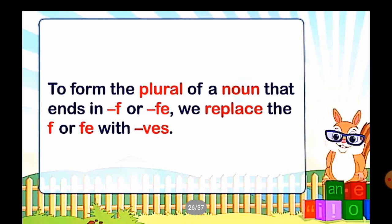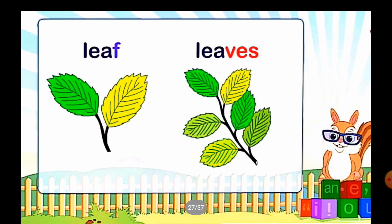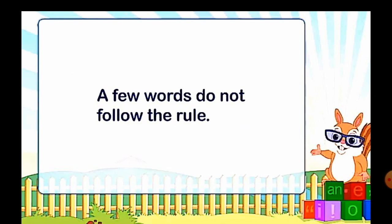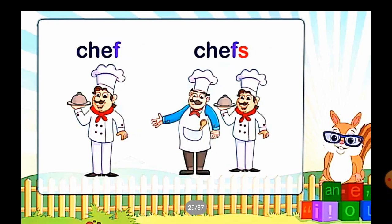Next, to form the plural of a noun that ends in F or FE, we replace the F or FE with VES. For example: 'Leaf' — the last letter is F, so we replace it with VES to get 'leaves'. However, a few words do not follow this rule. For example: 'Chef' — even though it ends in F, it takes a direct S to give 'chefs'.